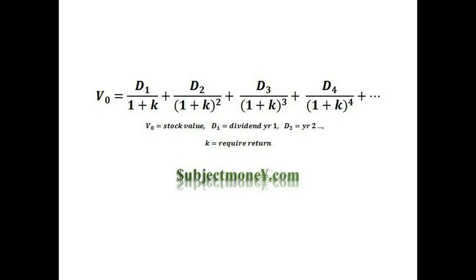Therefore, under the dividend discount model, the value of the stock today is ultimately derived by all the future dividends that the stock will pay out. When investors apply the dividend discount model, they would know the date that they plan on selling the stock and would solve for the expected value of the stock at that date, then discount that price to its present value.